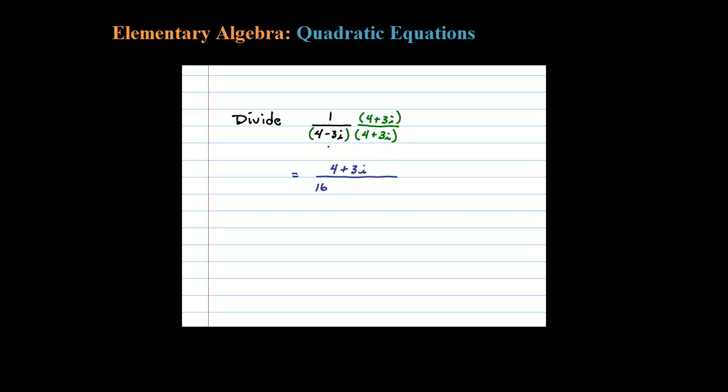And in the denominator we have to distribute. So 4 times 4 is 16, 4 times 3i is plus 12i, negative 3i times 4 is minus 12i, and negative 3i times 3i is minus 9i squared.